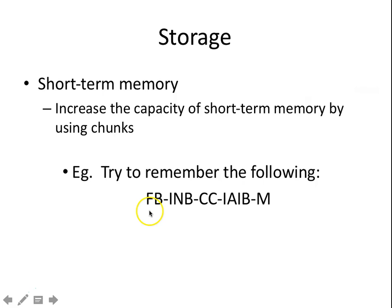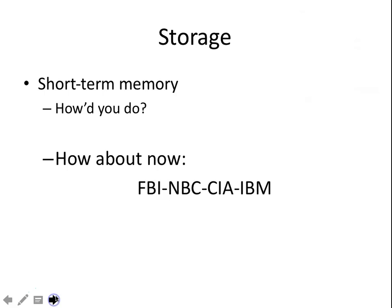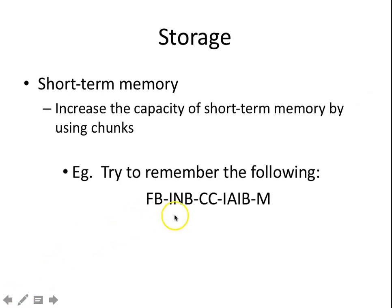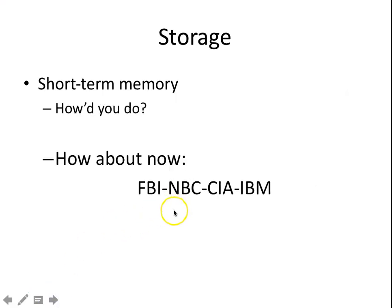What if I gave it to you like this? Easier — same exact letters, just chunked differently. Before, it looked totally random. But chunked as FBI, NBC, CIA, IBM — instead of a whole bunch of random letters, it's really just four things. Four things are pretty easy to remember.